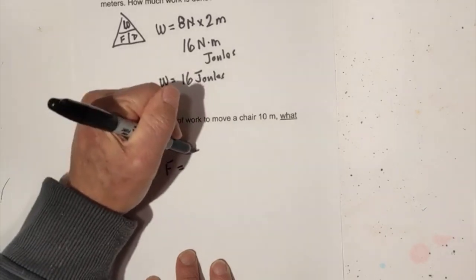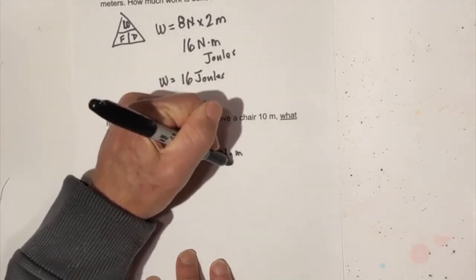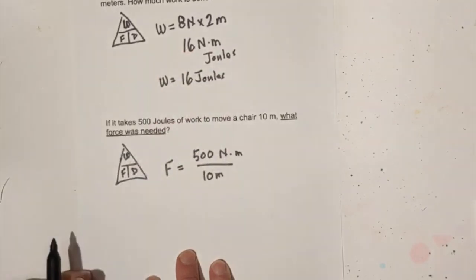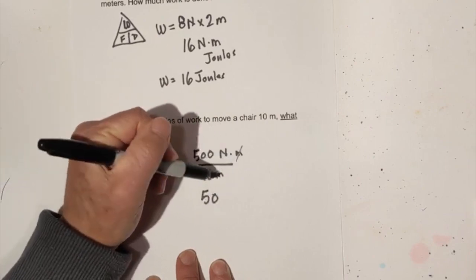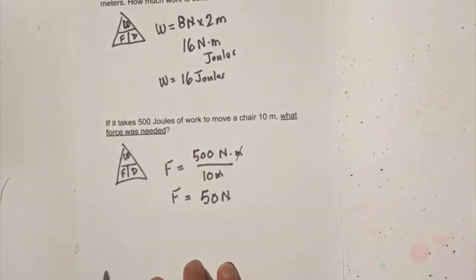So we have 500 joules and I'm going to rewrite instead of joules I'm going to go newton times meter over 10 meters. 500 divided by 10 is 50. Watch the units, the meters cancel and you're left with newtons which force is measured in.